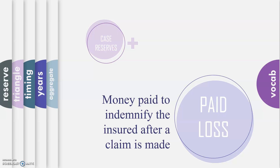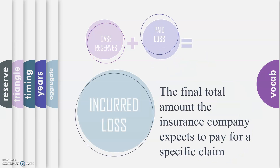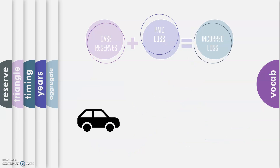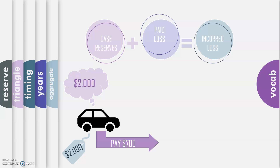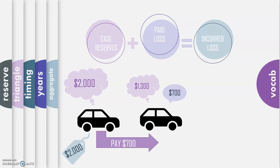When you add case reserves and paid loss together, you get incurred loss. Incurred loss is the total amount of money that the insurance company expects to pay for specific claims. For example: the adjuster sets aside $2,000 in case reserves. Case reserve is $2,000, paid loss is nothing, and incurred loss right now is $2,000. Later, we pay out $700 on this claim — now the case reserve is reduced to $1,300, paid loss is $700, and incurred is still $2,000 because $1,300 plus $700 equals $2,000. Finally, we make a final payout of $1,300, case reserve goes to zero, paid loss is $2,000, and incurred loss is still $2,000.